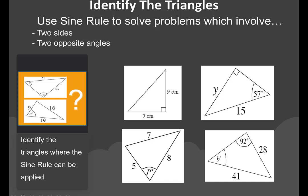Let's identify the triangles where the sine rule can be applied. In the first example we have a right-angle triangle with two sides given — we cannot use the sine rule here; we use Pythagoras instead. In the second example we have a right-angle triangle with an opposite angle of 90 degrees — again we cannot use the sine rule. In example three, we have an angle and opposite side of 7, but sides 5 and 8 have no opposite angles given, so we cannot use the sine rule.